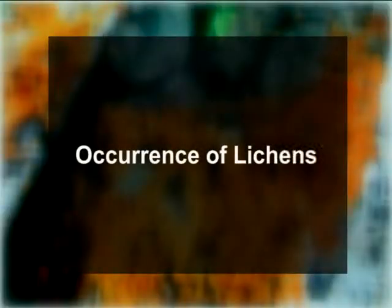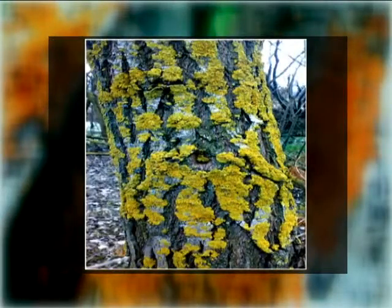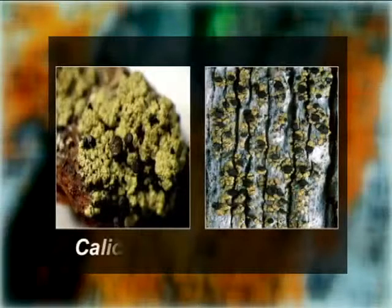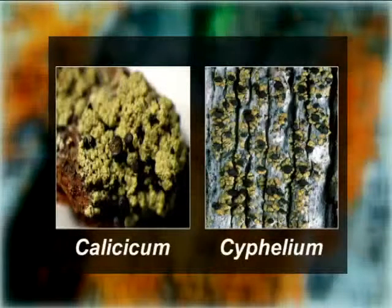Based on their place of occurrence, lichens may fall into the following six groups. First, Corticolous lichens: these develop on the bark of trees — for example, species of Parmelia and Usnea. Second, Lignicolous lichens: they develop directly on wood — for example, species of Calicium and Cyphelium.